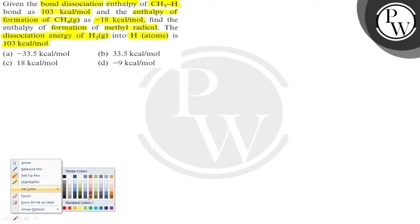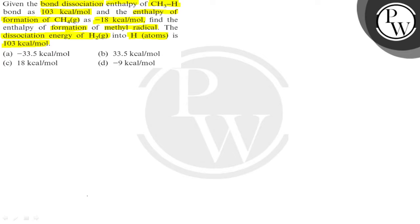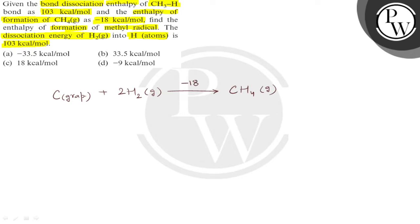आपको कुछ thermodynamical informations given है और उनकी help से आपको CH3 free radical का heat of formation determine करना है। CH4 का heat of formation आपको दिया हुआ है: carbon graphite plus 2H2 gaseous react होते हैं और methane form करते हैं gaseous phase में। इसके लिए heat of formation है minus 18 kilocalorie per mole। CH4 का dissociation होता है और यह CH3 free radical और H free radical में dissociate होता है, इसके लिए आपको energy दी होई है plus 103 kilocalorie।